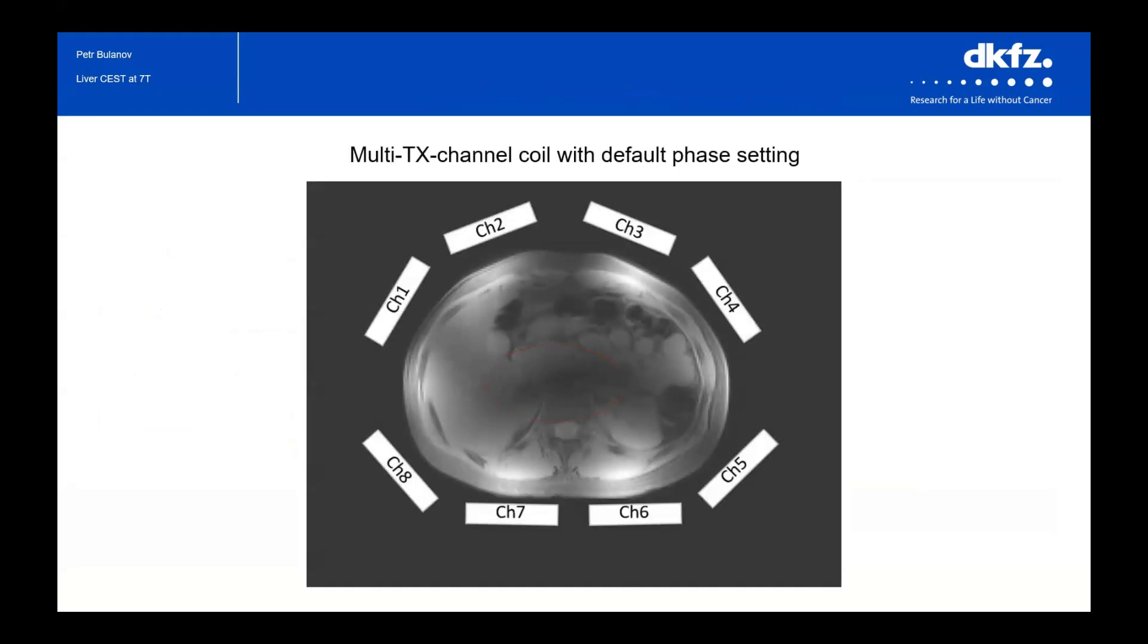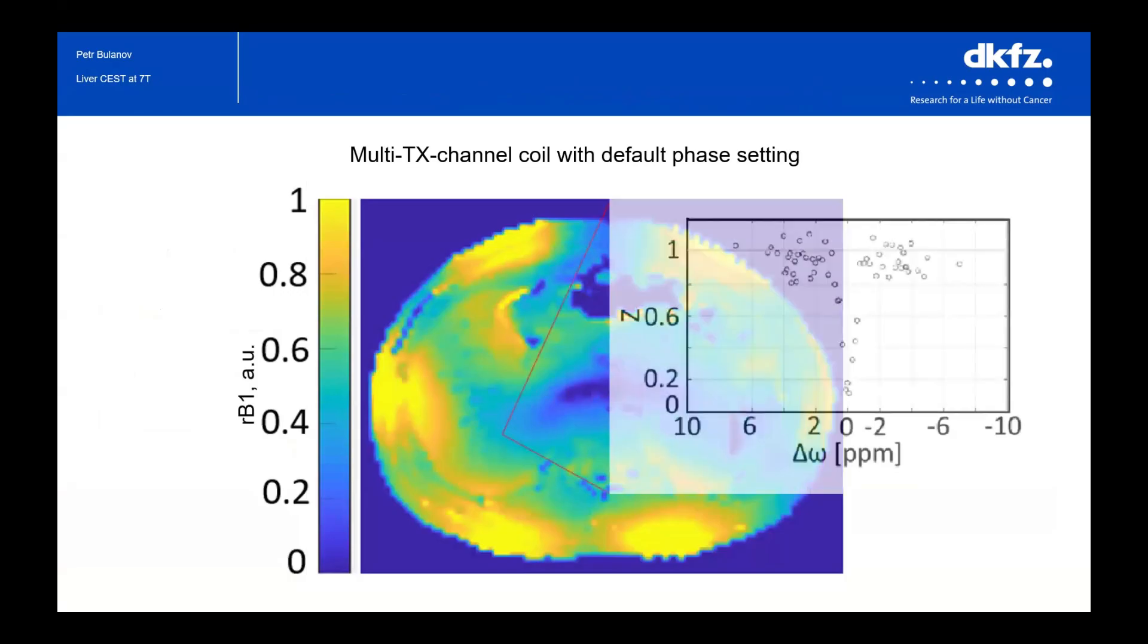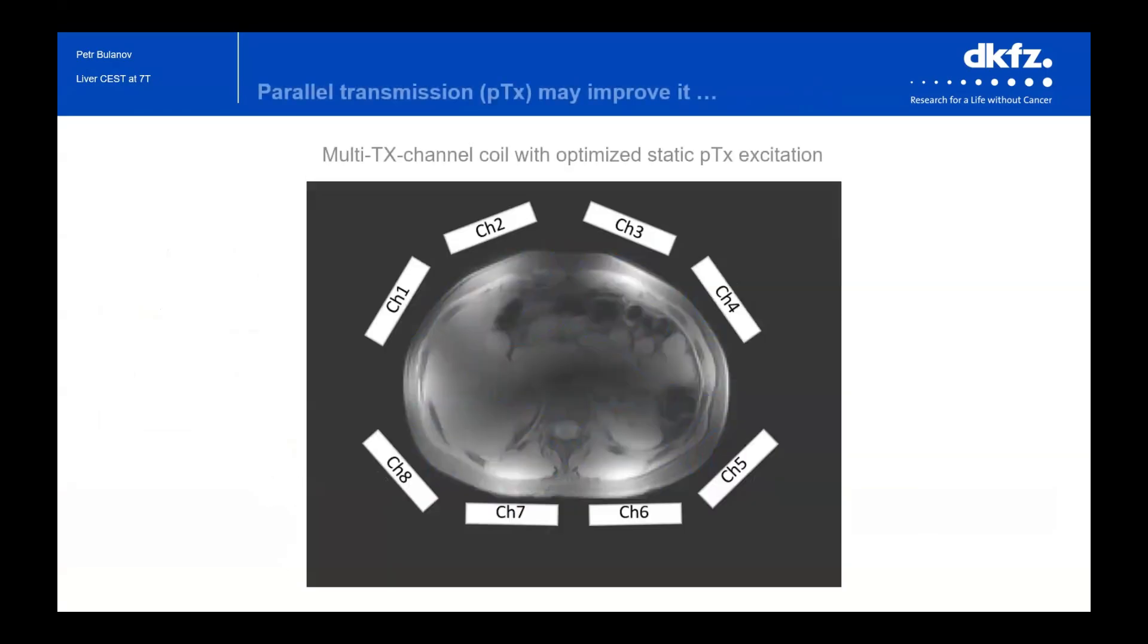In conventional 7 Tesla MRI, we're using the same pulses for each coil element, which gives us suboptimal and uncontrolled signal distribution and very noisy spectra in some places. But with PTX technology,